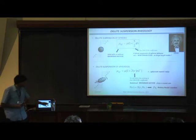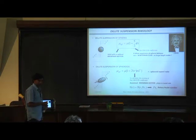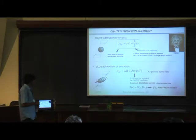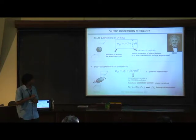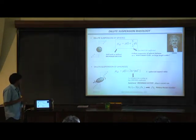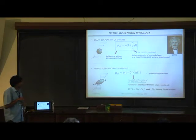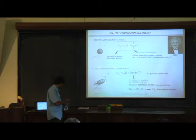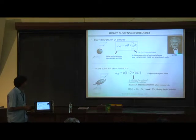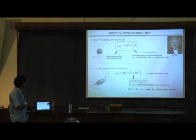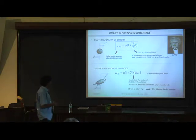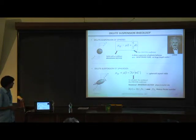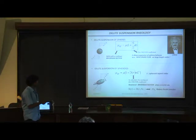Dilute suspension rheology had an illustrious start. In 1906, Einstein first calculated the viscosity of a dilute suspension of spheres, where dilute means the spheres are far apart and don't interact — each sphere only sees the imposed shear flow. Einstein showed that the viscosity of the suspension equals the suspending fluid viscosity times a factor with an enhancement proportional to the volume fraction, the so-called Einstein coefficient of 5/2. A dilute suspension of spheres behaves as a Newtonian fluid with a slightly enhanced viscosity.